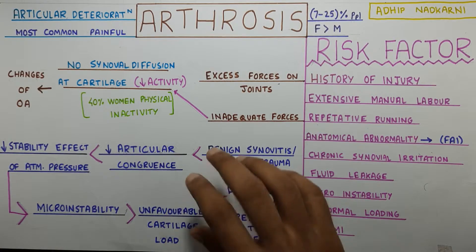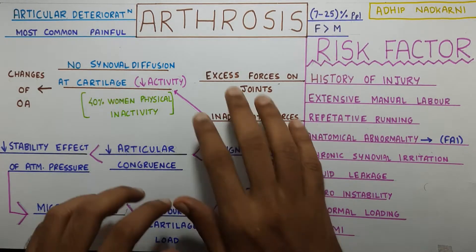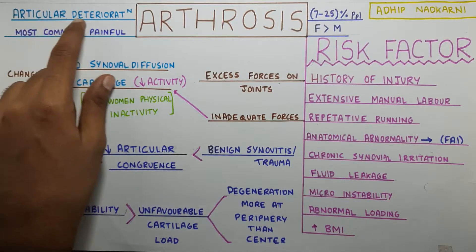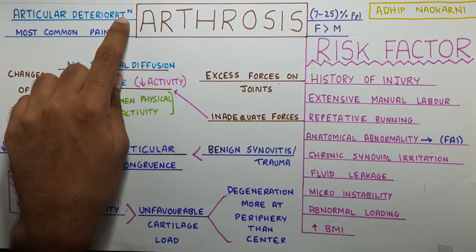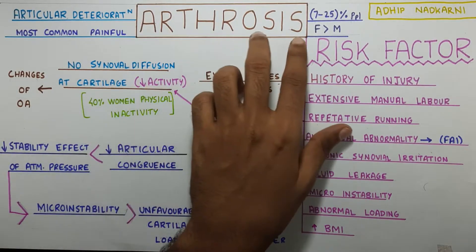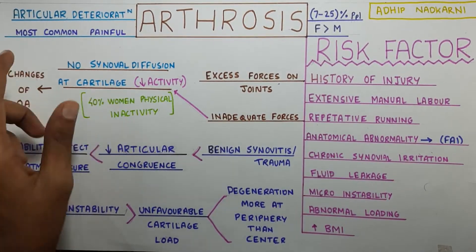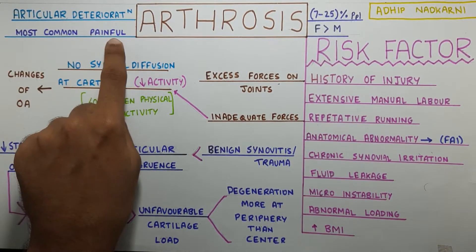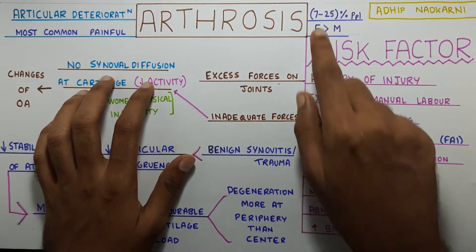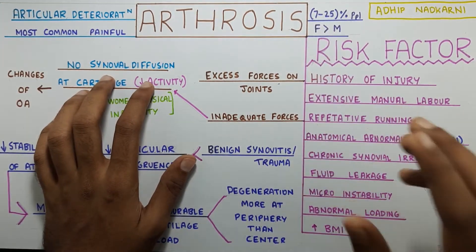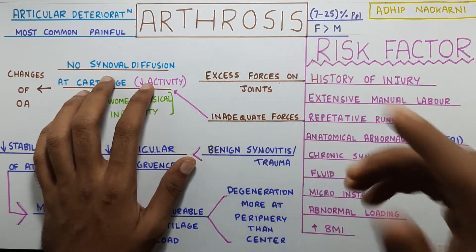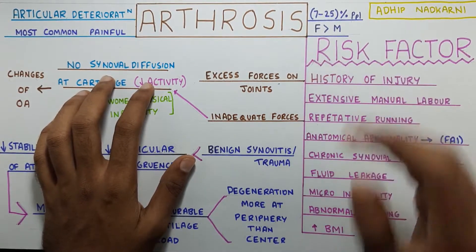So in this video, we are going to talk about arthrosis at the hip joint. Now what is arthrosis? Articular deterioration — arthro refers to articular and osis is basically degeneration. It is the most common and painful hip condition that we see, and 7 to 25% of people get affected. Females are more affected than males.